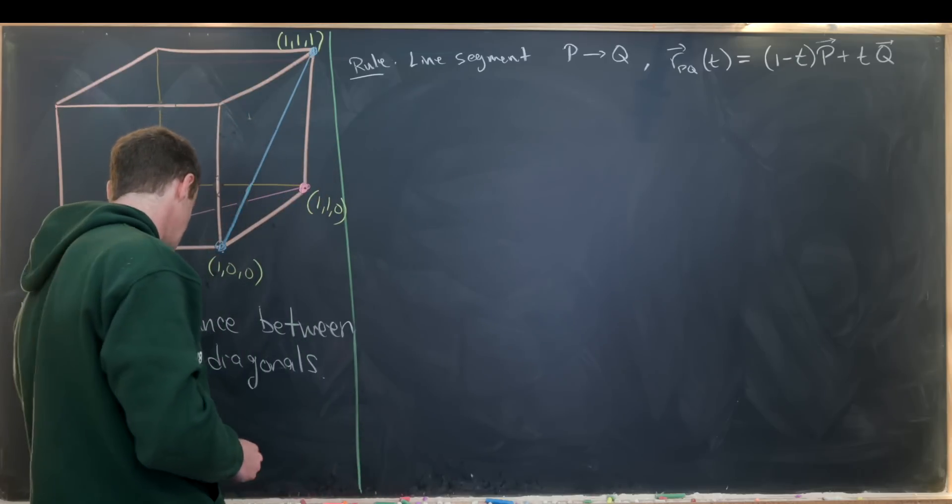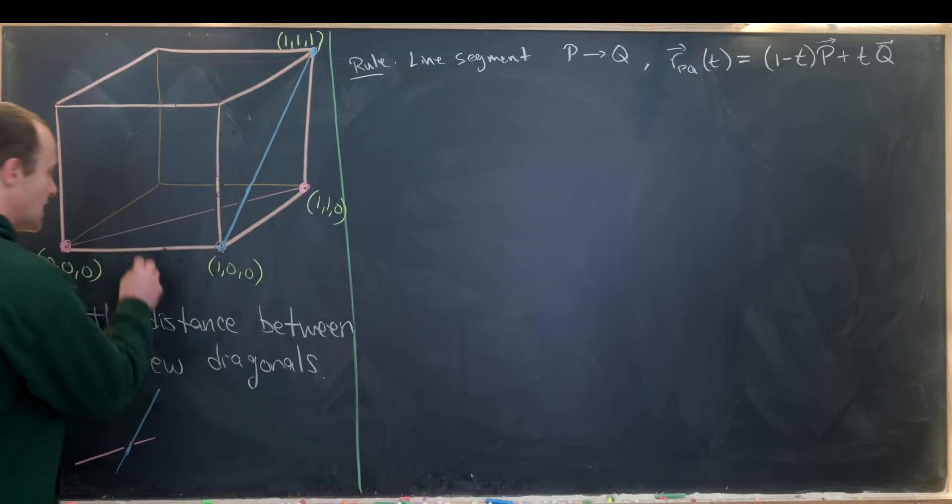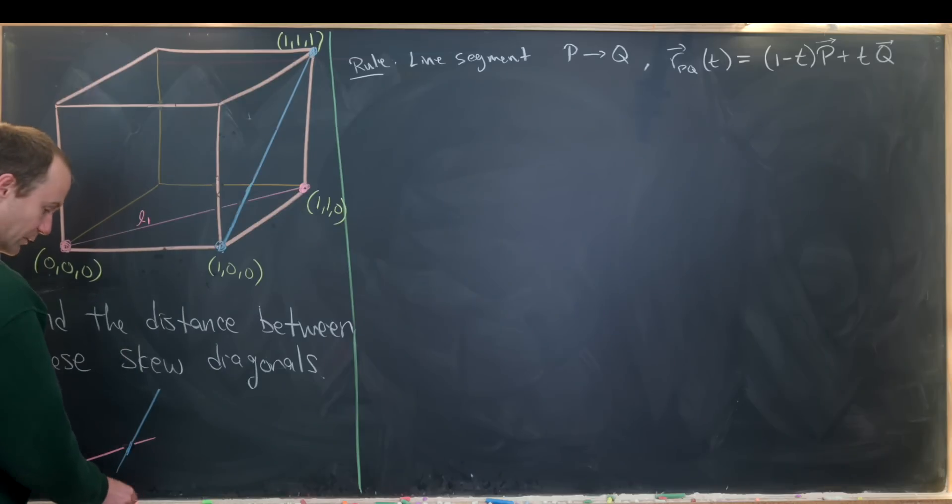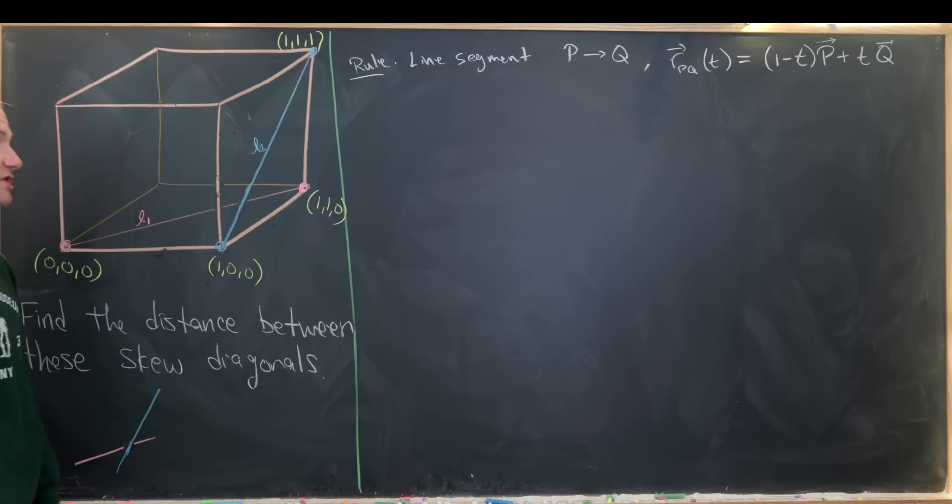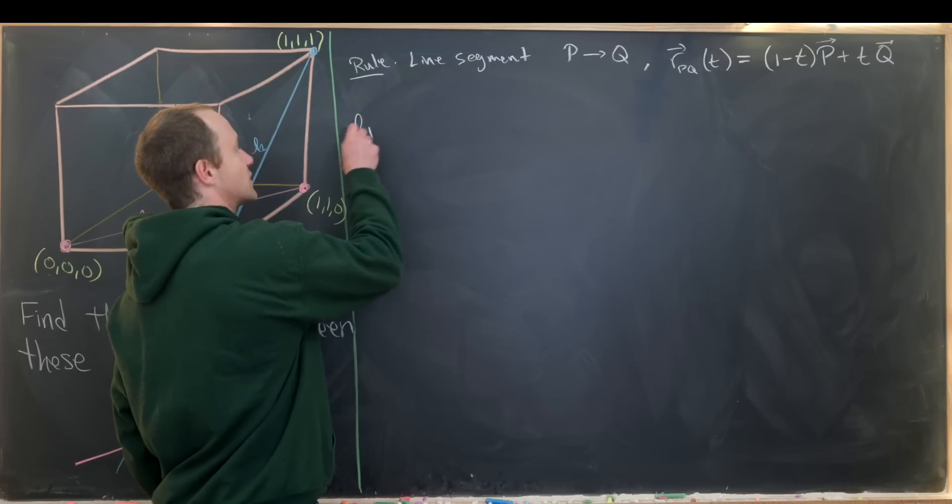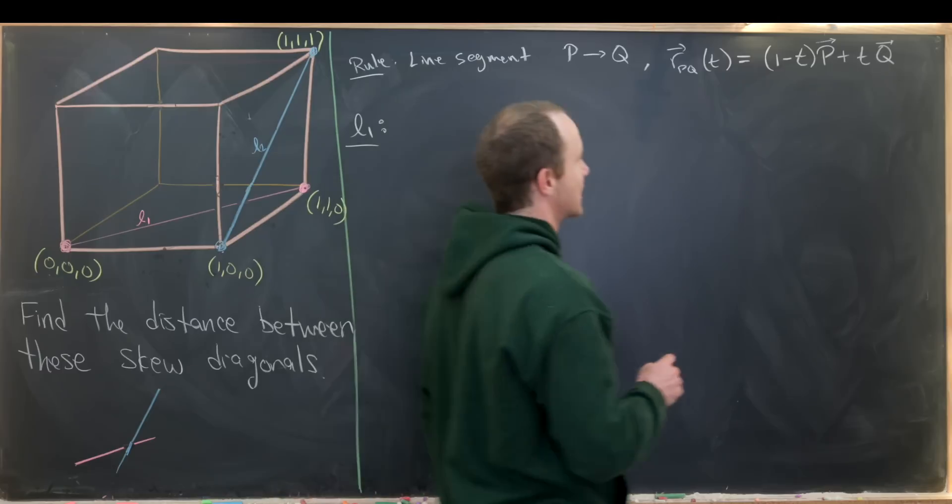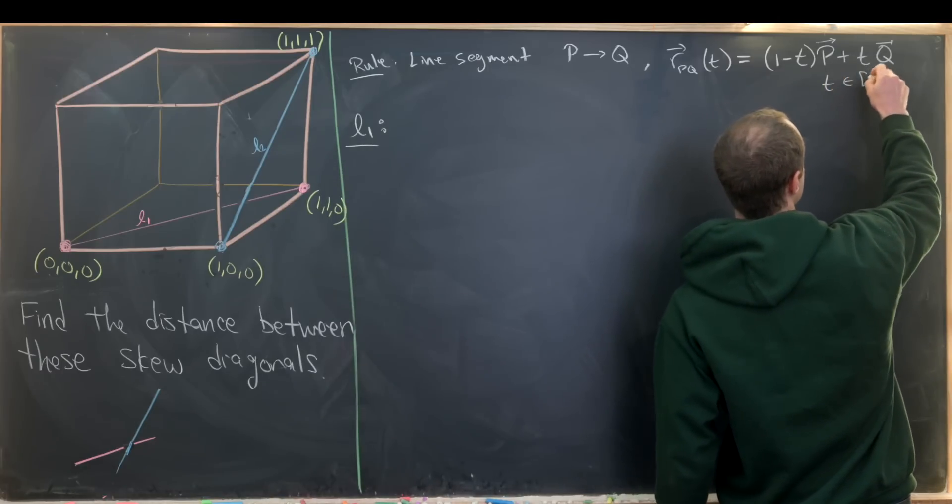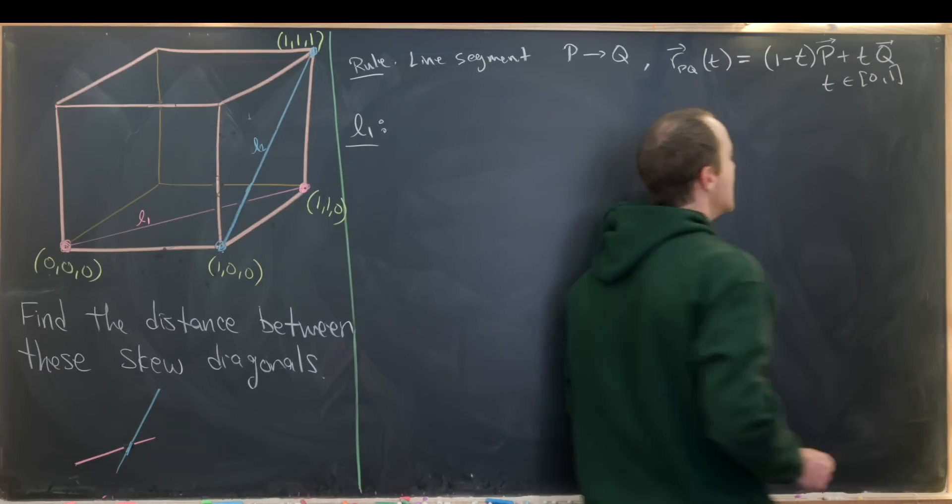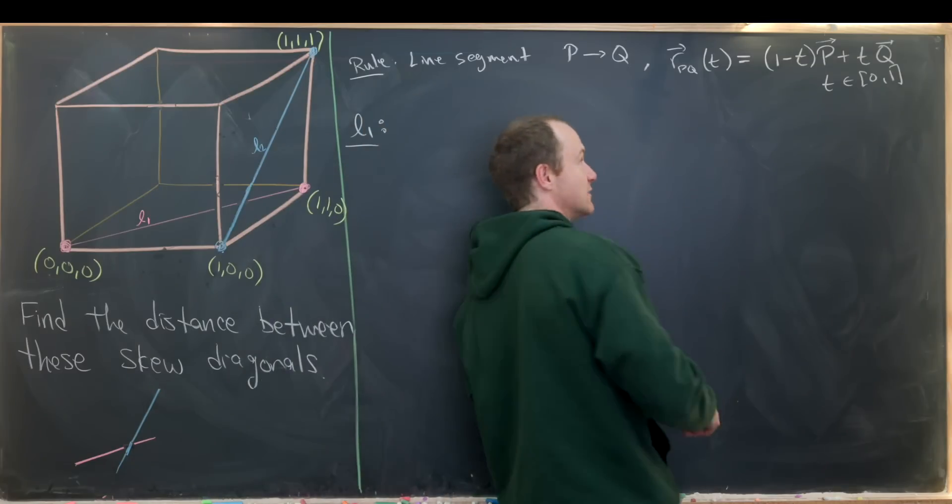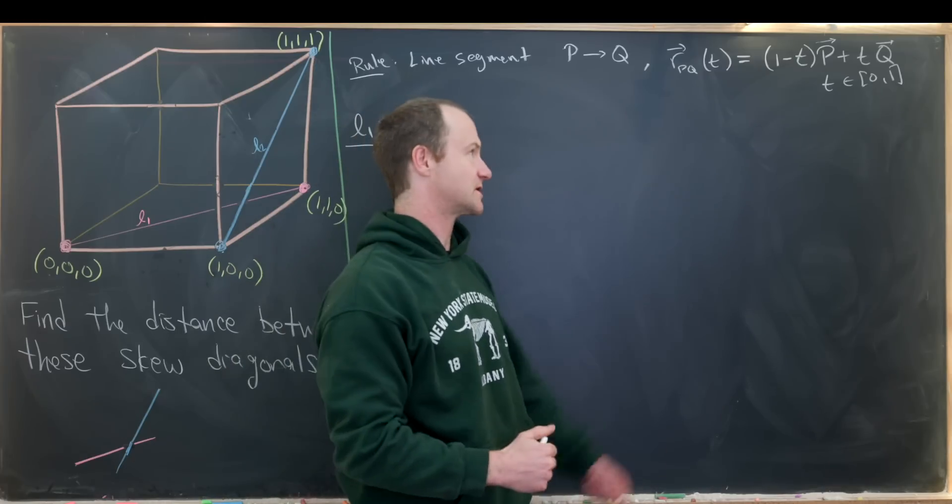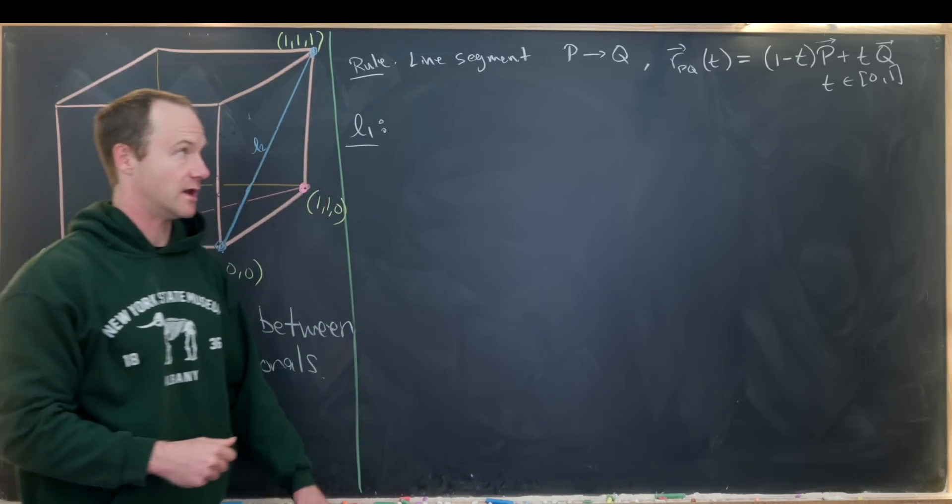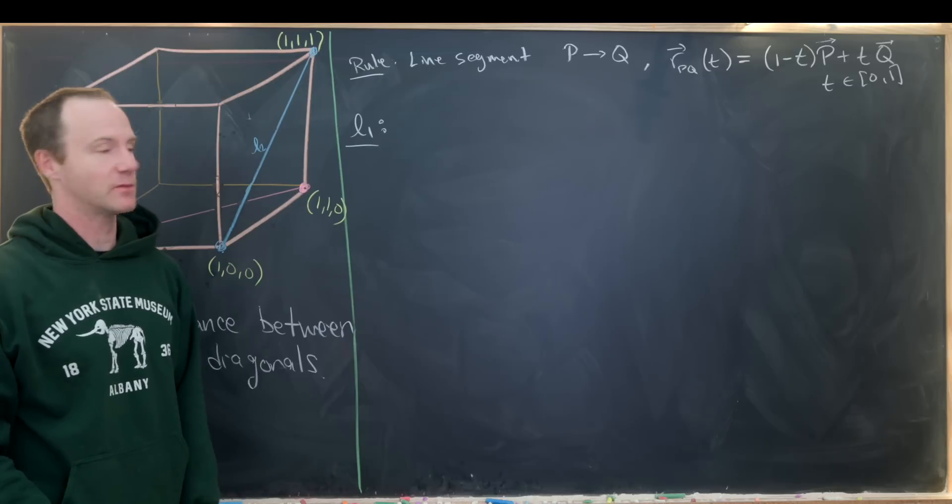Now let's give these guys names over here. Maybe we'll call this pink one L1 for line segment 1, and we'll call this blue one L2 for line segment 2. And now we'll parametrize each of these line segments. So let's first parametrize L1. And before we get started, I should point out that T here comes from the interval 0 to 1. And this works because if we plug in T equals 0, this bit collapses and we just have the point P, and vice versa if we plug in T equals 1. The P part collapses and we just have the point Q.